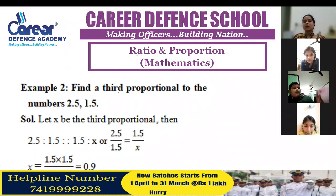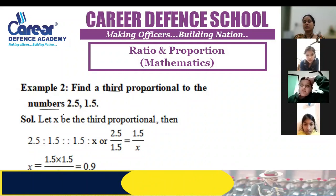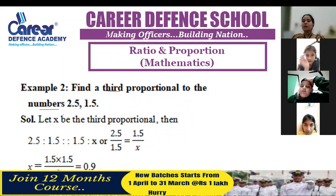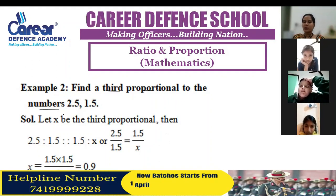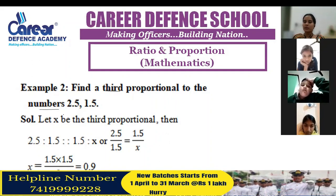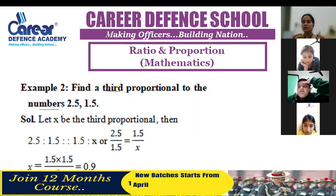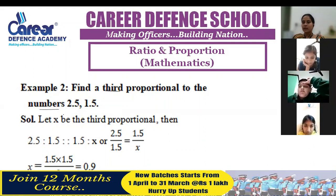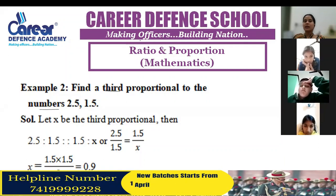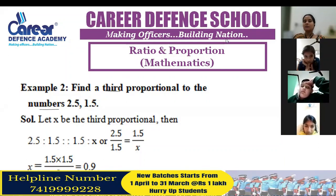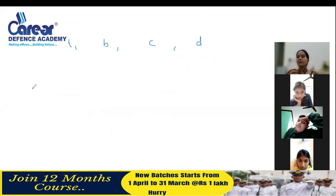Next question: find the third proportional to the numbers. Look — how many numbers are given? Two numbers are given: 2.5 and 1.5. But in proportion, how many numbers are given total? Four numbers are given. So in this question, we need four numbers: A, B, C, and D.